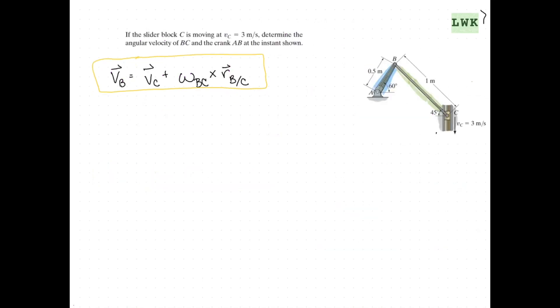Let's start by looking at an example now that we know what our procedure is. In this problem, we have a slider block C moving at Vc equals 3 meters per second, and we want to find the angular velocity of BC and the crank AB at the instant shown.